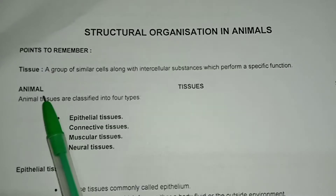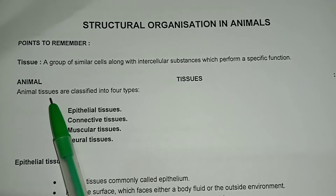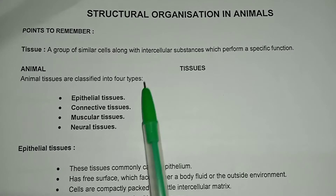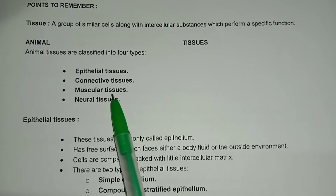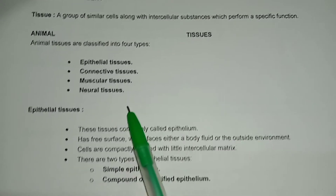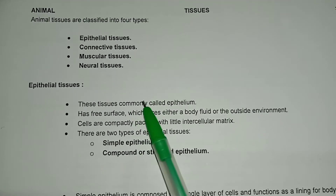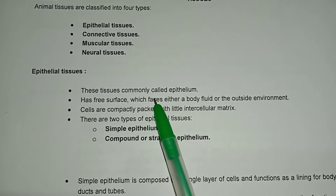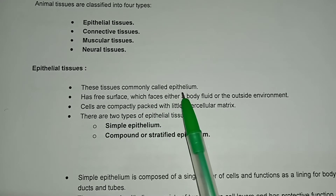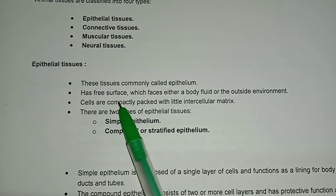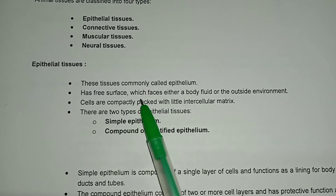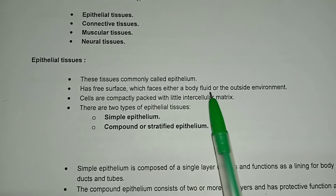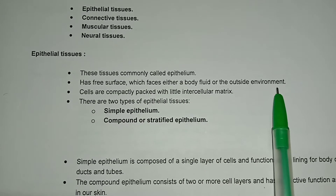Animal tissues we classify into four types: epithelial tissue, connective tissue, muscular tissue, and neural tissue. Epithelial tissue — these tissues, commonly called epithelium, have a free surface which faces either a body fluid or the outside environment.